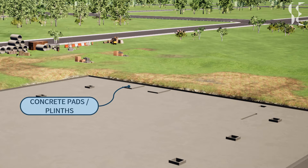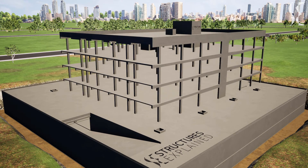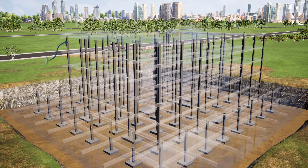This ends our substructure and now we will see superstructure members. First we have columns, which are vertical load-bearing members on which beams and slabs rest. Columns transfer the gravity loads and lateral loads from wind and earthquake. Columns can exist in various shapes and sizes according to architectural and design requirements — they can be T-shaped, L-shaped, circular, rectangular, or square.